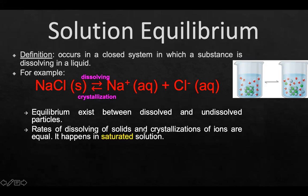The rate of dissolving solids and crystallization of ions are equal, and it happens in a saturated solution. If we add more salt to this, it would just end up as crystals in the bottom. The amounts of solid and ions remain constant in the solution. We can only dissolve a certain amount of salt in a certain amount of water.